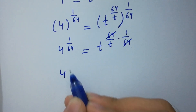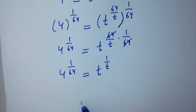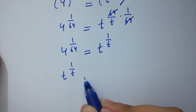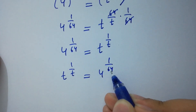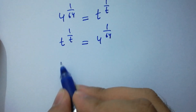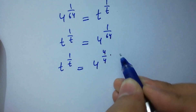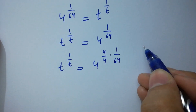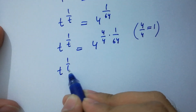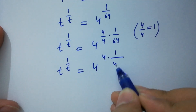We have 4 to the power 1 over 64 equals t to the power 1 over t, which can be written as t to the power 1 over t equals 4 to the power 1 over 64. We can rewrite this as 4 to the power 4 over 4 times 1 over 64, since 4 over 4 equals 1. This gives 4 to the power 4 times 1 over 4 times 64.